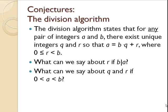The division algorithm states that for any pair of integers a and b, there exist unique integers q and r, so that a equals b times q plus r. What can we say about r if b divides a? What can we say about q and r if a is between zero and b?